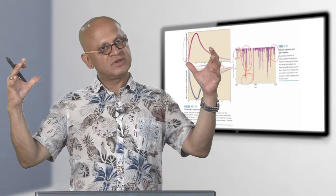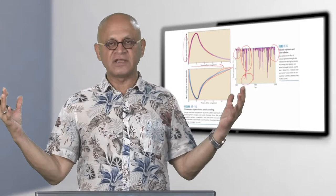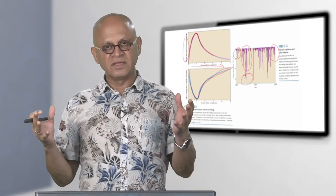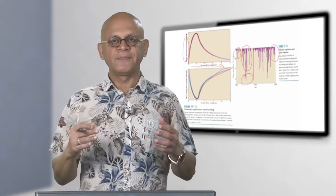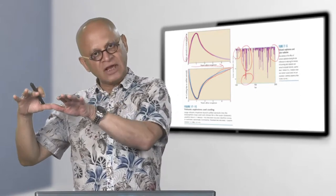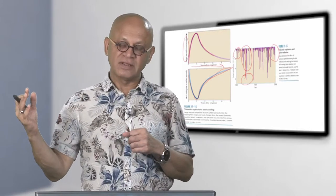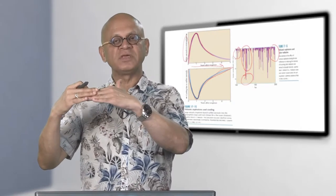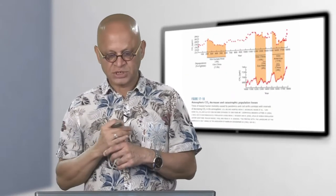On geologic time scales, volcanoes continuously put CO2 into the atmosphere while weathering pulls it down. Even though humans are making a huge perturbation, once the perturbation stops, weathering will begin to remove the CO2 we have added — but equilibration will take a very long time, and the equilibrium temperature will depend on the radiation balance, not necessarily matching the current climate.